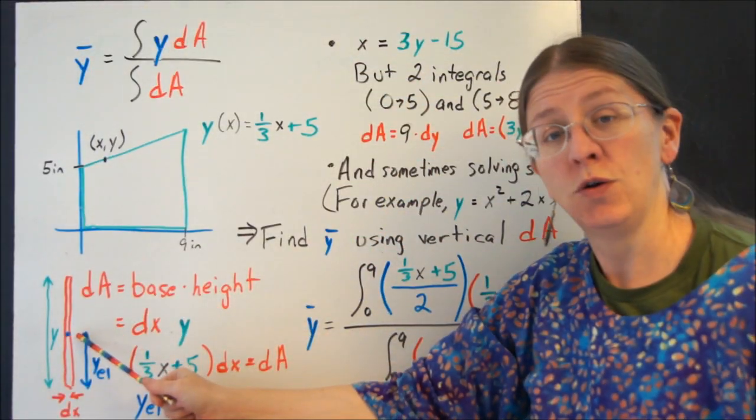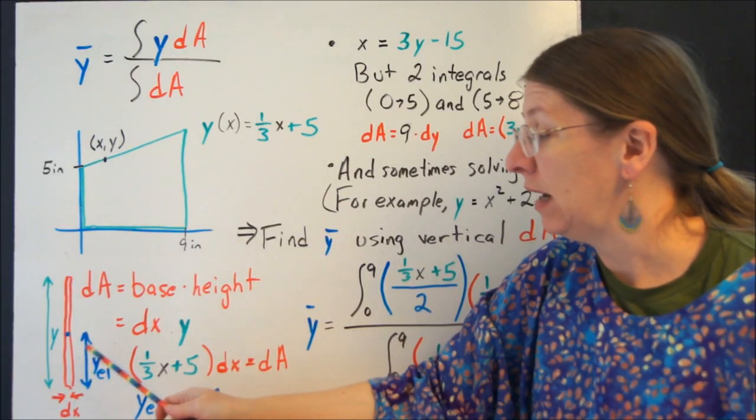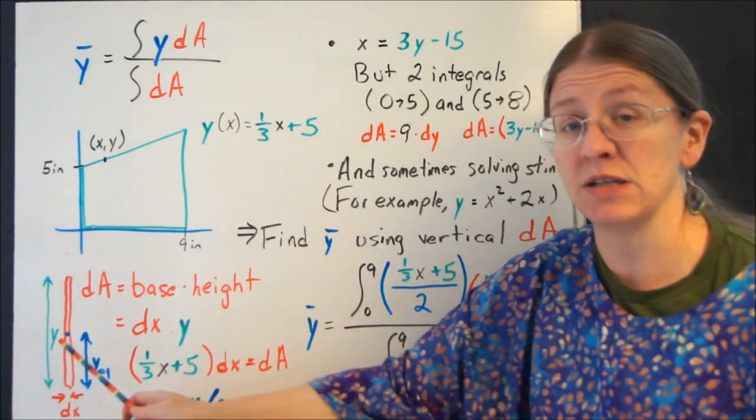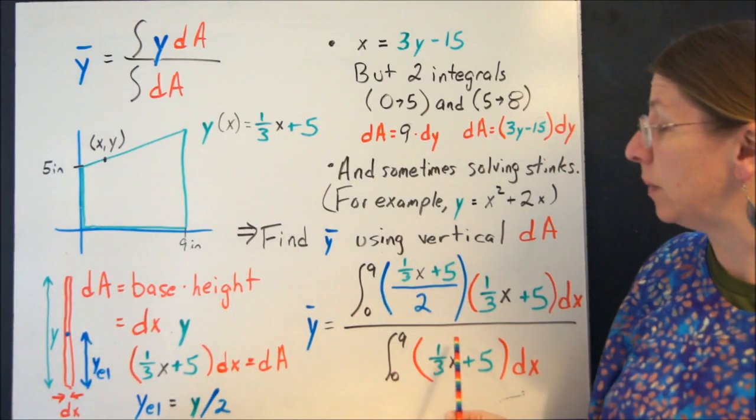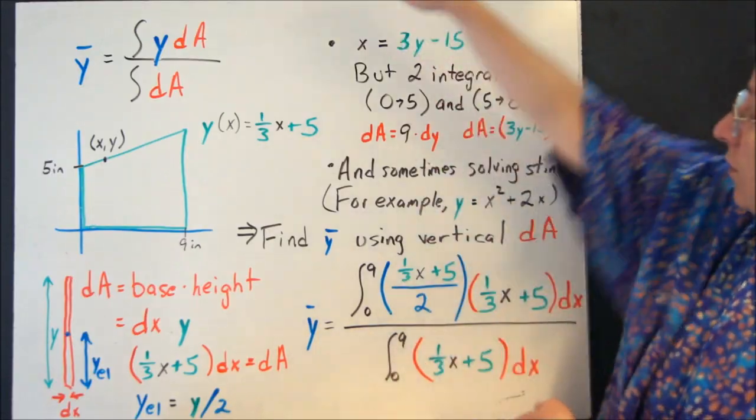But when I start talking about a vertical rectangle, a vertical dA, to find y-bar, it is no longer the same. These two things aren't the same anymore. So that's when you have to be a little bit careful when you're going to use a different stripe than you would start with.